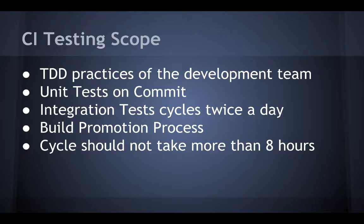CI Scope: using CI, you should be able to do multiple deployments to production a day. However, it is important to figure out how to confine the scope of the CI to achieve that. TDD is an absolute must, but unit tests on commit is the next step, followed by integration tests on a promoted build that has passed the smoke unit tests. This requires a promotion process for builds. Promoted builds should go through a full integration test twice a day. Late night runs allow your test builds to be ready the next morning, and you do another run in the late morning and see the results by end of day.